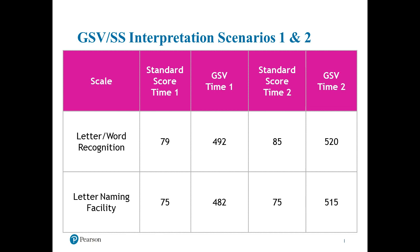In scenario one: for a letter word recognition test, at time one a child gets a standard score of 79 (well below average) and a growth scale value of 429. If we give the test again six months later and the standard score is 85 and growth scale value is 520, that shows the child increased their skill from time one to time two. Interpreting that in light of the standard score, it went up faster than their peer group because the standard score increased from time one to time two.